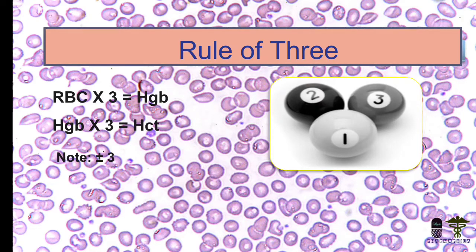What is the rule of 3? According to the rule of 3, your HB is equivalent to 3x multiple of RBC. Your HCV must be equivalent to 3x multiple of HB, with the range of plus or minus 3.